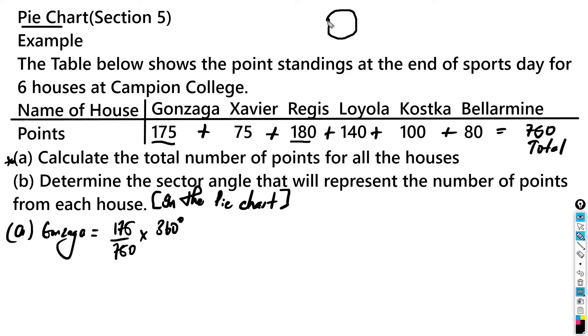For B, which is Xavier, we should actually get 75 over 750 multiplied by 360, which gives us 36 degrees. Then C would be Regis, which is 180 over 750 multiplied by 360, which should give us 86.4 degrees.